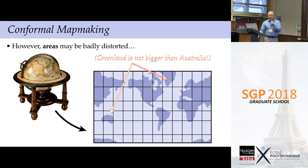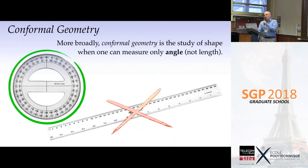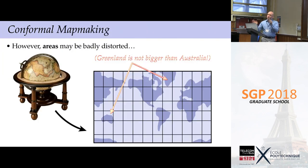So you can always flatten the surface of the earth so that east and north remain at right angles — very useful if you're navigating a ship. You'll know you're going in the right direction and will reach your destination, even though distances have been stretched. The flip side is that areas can be badly distorted. This is the Mercator projection: the standard conformal map of the earth. Greenland looks like a massive continent while Australia looks like a little island — that's the tension always present when working with conformal geometry. Angles are preserved exactly; you have to think about what happens to areas and lengths.